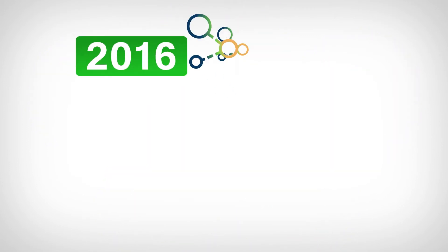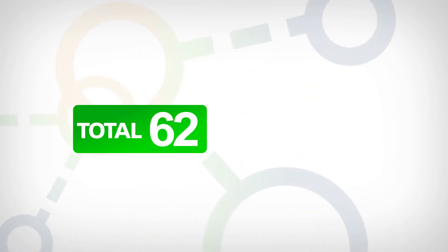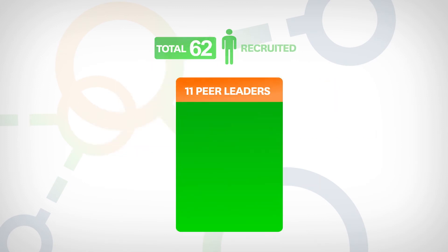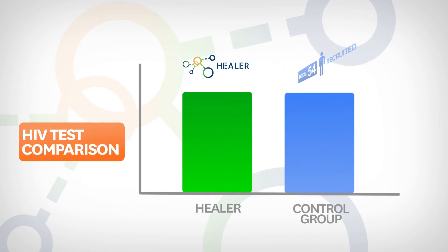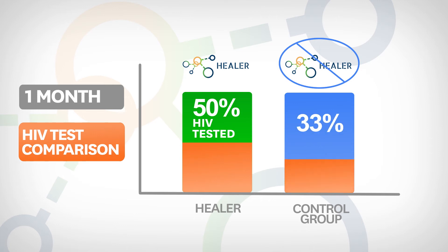In spring of 2016, we conducted a trial of the HEALER system with homeless youth agencies here in Los Angeles. A total of 62 youth were recruited, and from that group, HEALER selected 11 peer leaders. We compared this to a control group made of 54 youth where peer leaders were selected without using HEALER. After just one month, almost 50% of the youth in the HEALER subset who had previously gone untested had taken an HIV test, in contrast to only 33% in the control group, demonstrating that HEALER brings marked improvement over current approaches to network-based HIV interventions.